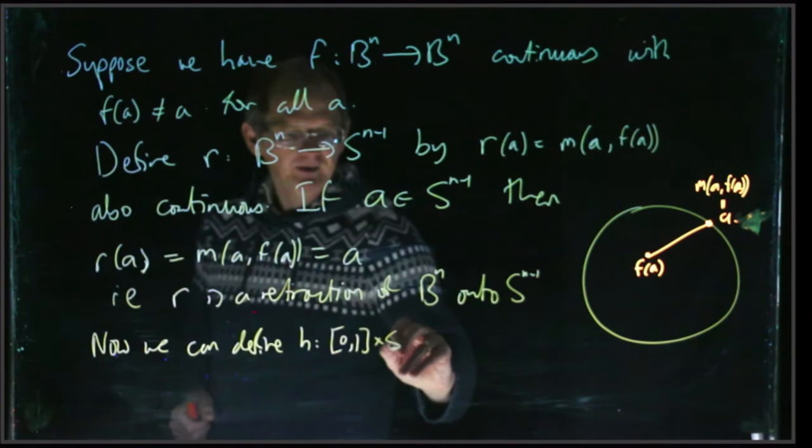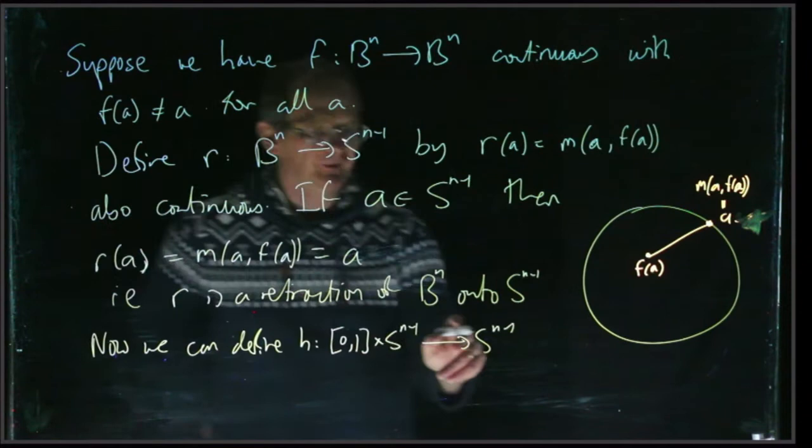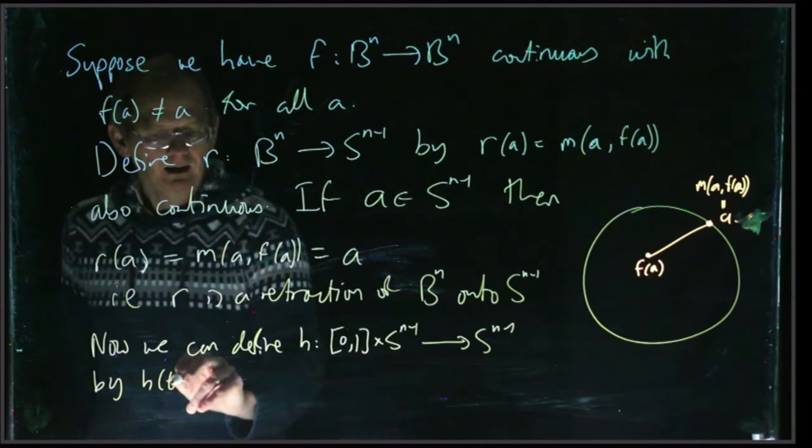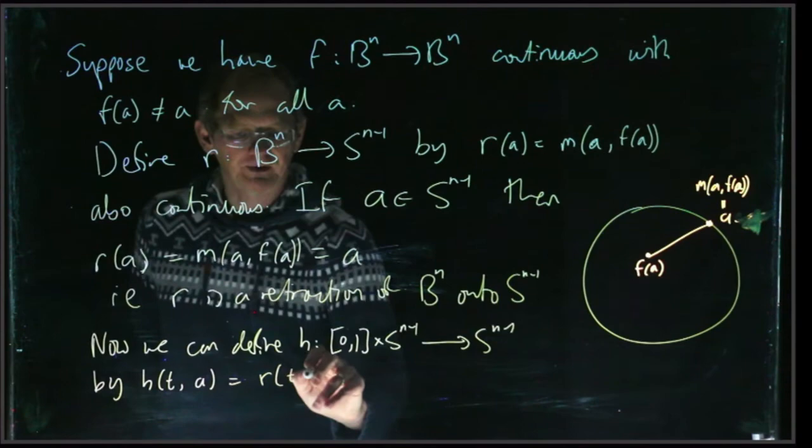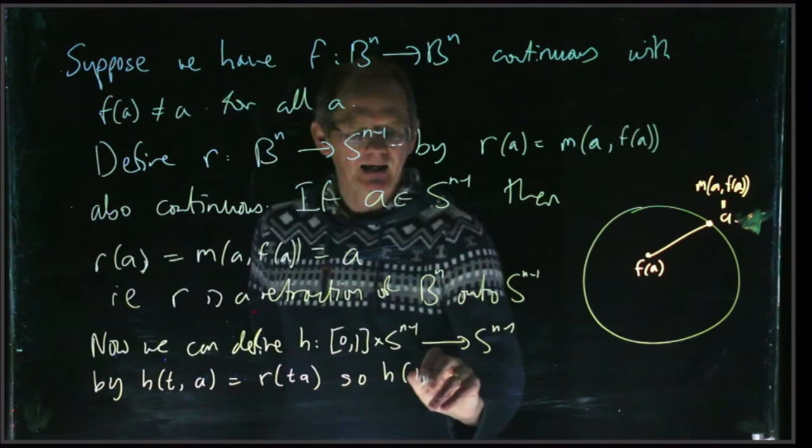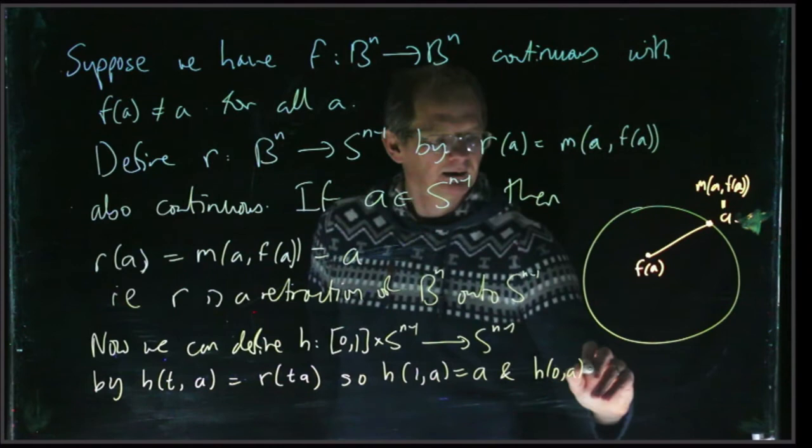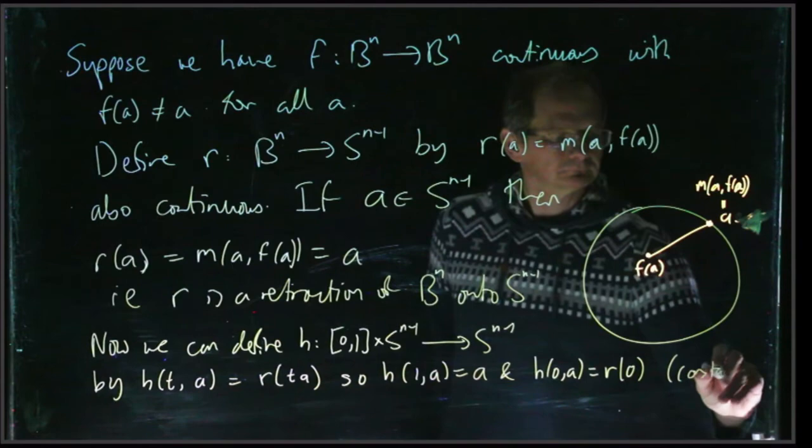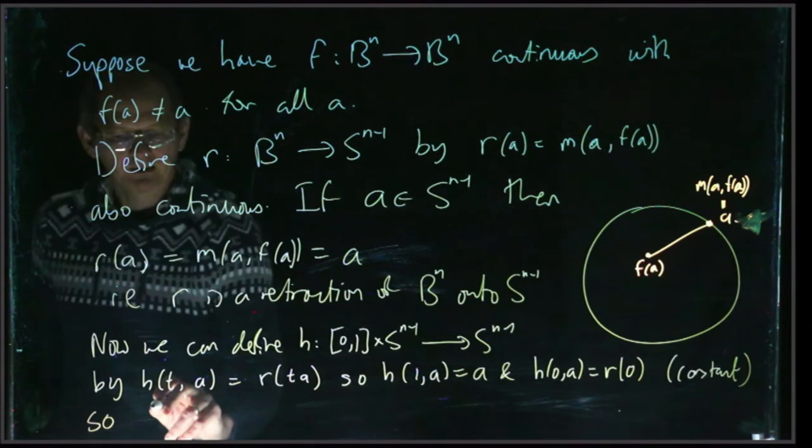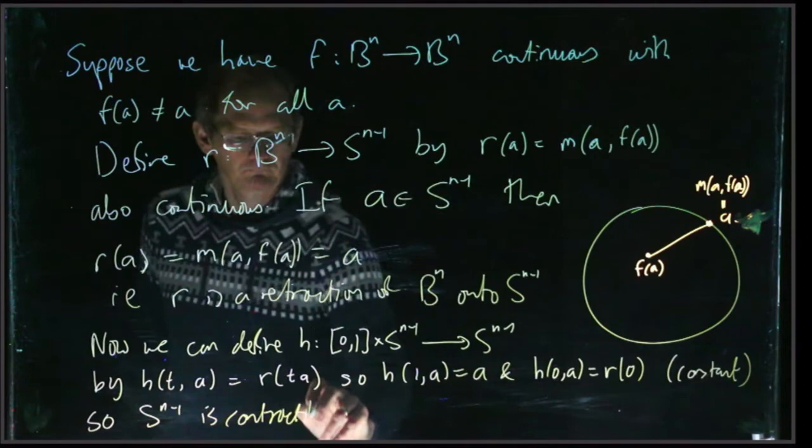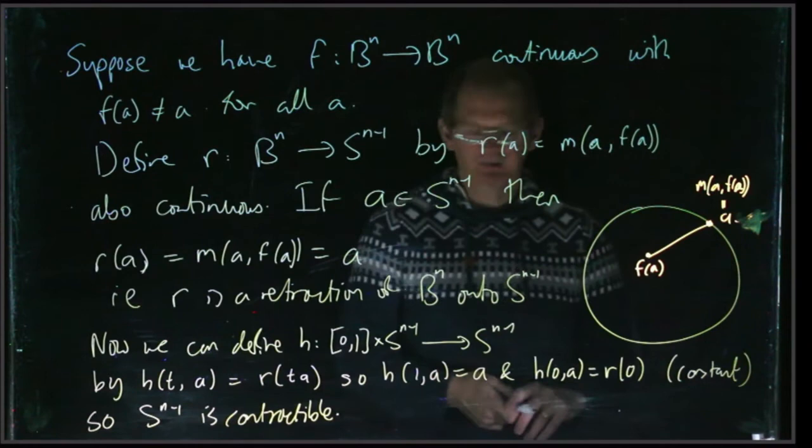We can define h from [0,1] × S^(n-1) to S^(n-1) by h(t,a) is just going to be r(t·a). So h(1,a) is just a and h(0,a) is r(0), which is a constant. So we conclude that S^(n-1) is contractible. This is a contraction. It's a homotopy from the identity map to a constant map. That's what we meant by a contraction.